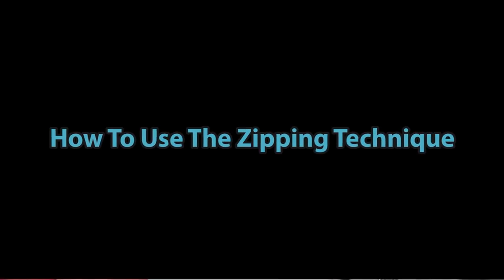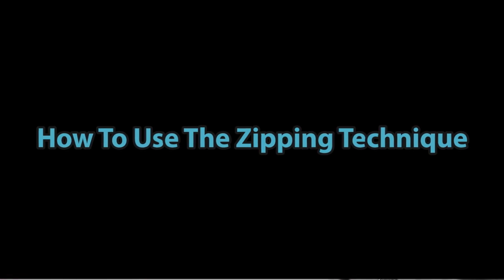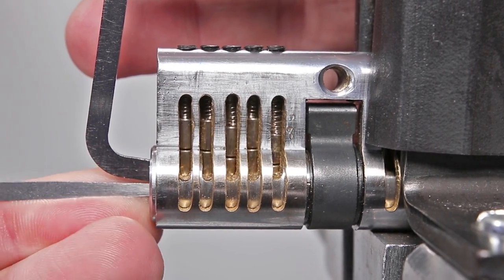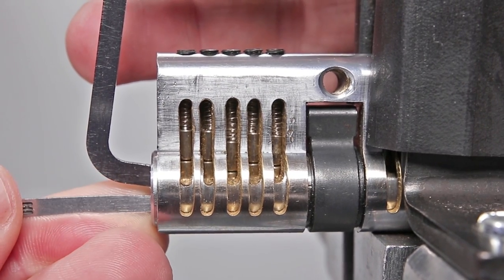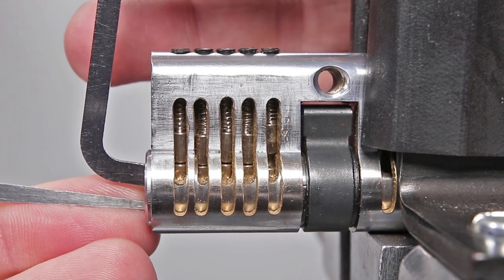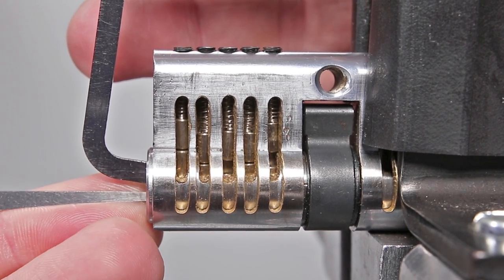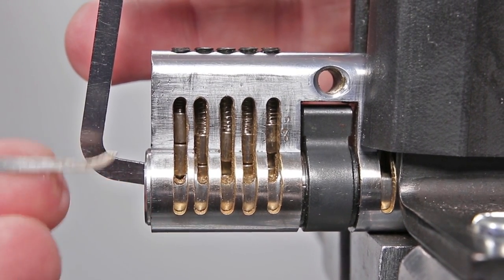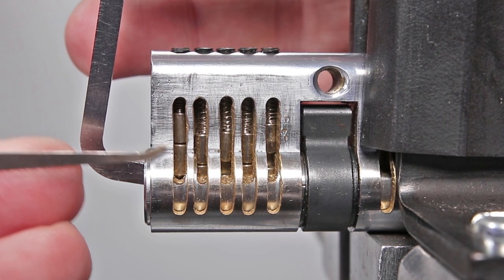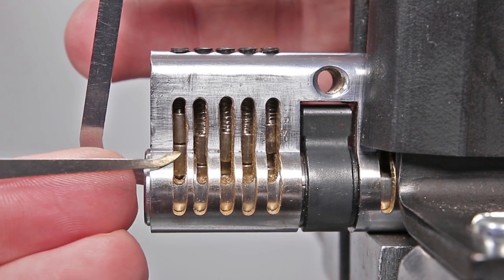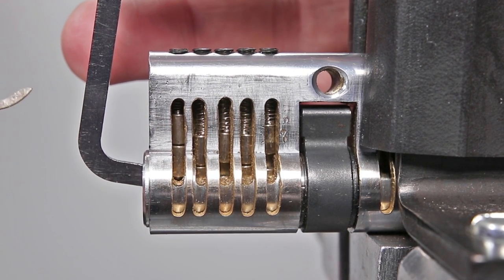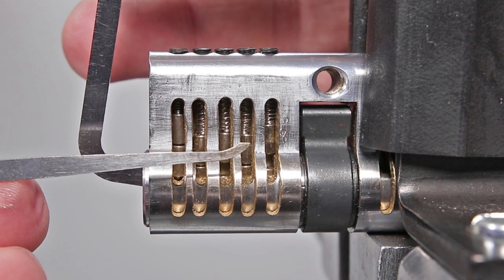I am going to first start off by demonstrating the zipping technique to recover from overset pins. In order to demonstrate that fully, I am going to start to pick the lock as I normally would. And now I am going to overset a pin intentionally, so I am going to try to overset key pin number one. You can see that key pin number one is overset because it is now lodged between the Bible and the plug, and is obstructing plug rotation. So traditionally what you might consider doing is just completely letting off your tension and letting all the pins drop back down.